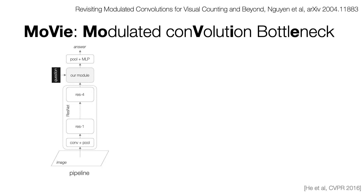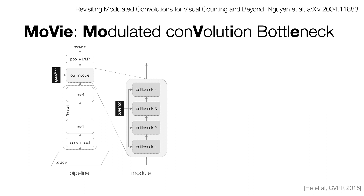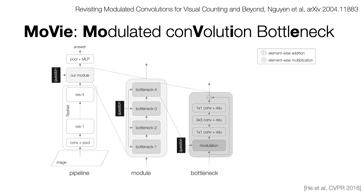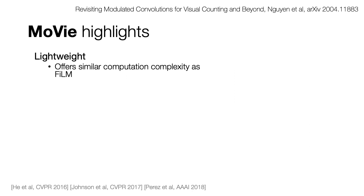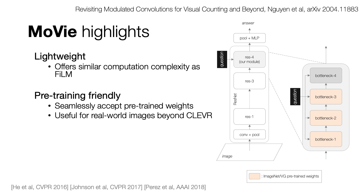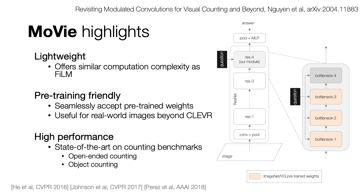We introduced Modulated conVolution bottlenEck, MOVIE, for counting problems, inspired by the feature-wise linear modulation of FiLM. Our overall pipeline starts from ResNet and adds a stack of four bottleneck layers before pooling into an MLP. Our bottleneck design follows the standard ResNet bottleneck, except for the modulation operation at the beginning of each block. Compared to the original FiLM, our MOVIE offers similar computational complexity and is pre-training friendly, since we can initialize our bottleneck with pre-trained weights from Visual Genome or ImageNet. With MOVIE, we achieve state-of-the-art results on several counting benchmarks.